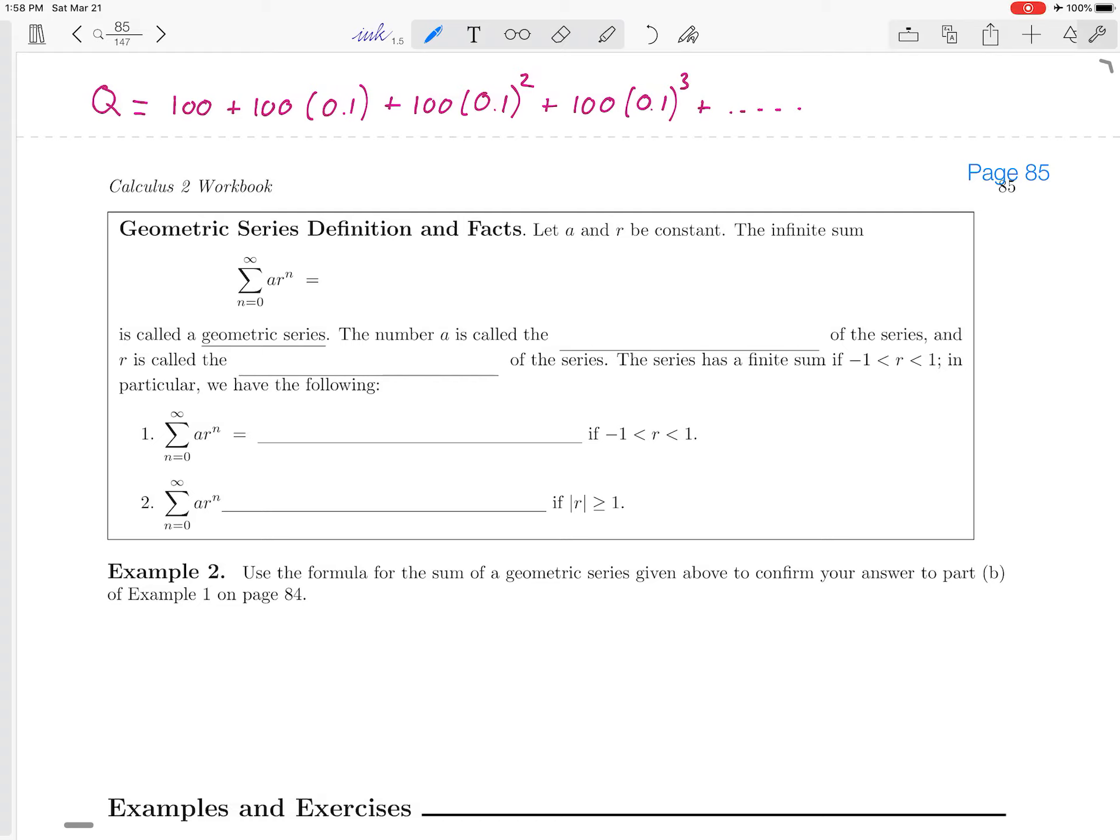In example 1 on page 84, we saw an example of a drug that was taken repeatedly and we wrote down an expression that gave us the amount of the drug in the body right after a tablet was taken, if you take it for a long, long time. We called this quantity Q and we came up with this long infinite sum that describes the amount of the drug in the body.